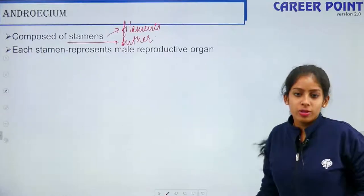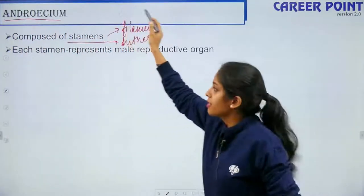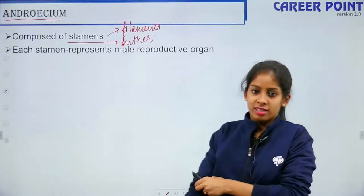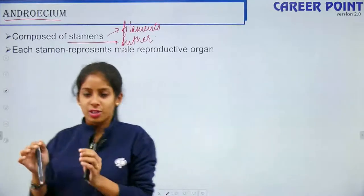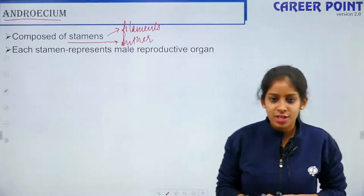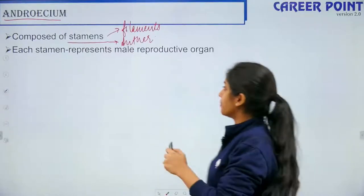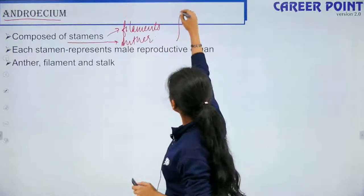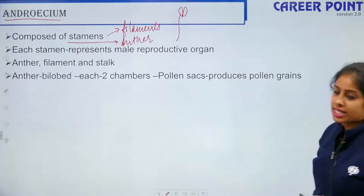Each stamen represents the male reproductive organ. Androecium represents the male reproductive system. Anther is bilobed and each chamber has pollen sacs which produce pollen grains. When a stamen cannot produce pollen grains, it is known as a sterile stamen and it is called a staminode.